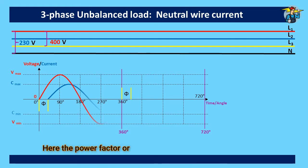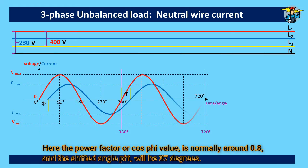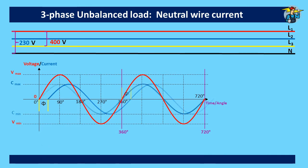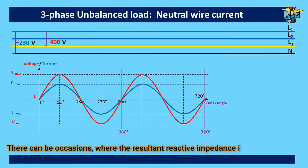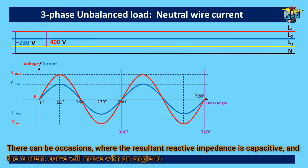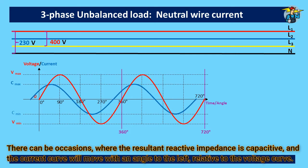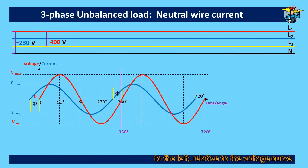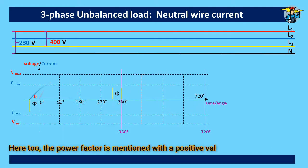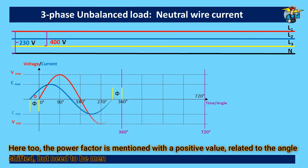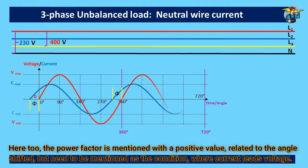Here the power factor is positive value, normally around 0.8, and the shifted angle phi will be 37 degrees. There can be occasions where the resultant reactive impedance is capacitive, and the current curve will move with an angle to the left relative to the voltage curve. Here too, the power factor is mentioned with a positive value related to the angle shifted, but need to be mentioned as the condition where current leads voltage.